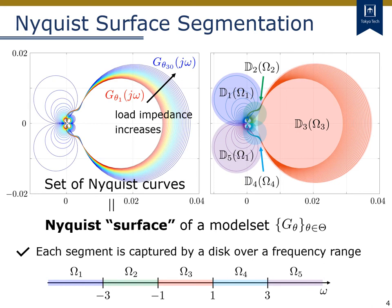So, the key idea for a set-based modeling is to divide the entire Nyquist surface into several segments. Here, we consider five disk segments, denoted by D1, D2, D3, D4, and D5. Each disk covers an oscillation mode of the power system. Please note that this segmentation of the Nyquist surface corresponds to the segmentation of the frequency range. In this sense, this expression based on multiple geometric domains can be viewed as a finite frequency generalization of the analysis in the previous lecture.